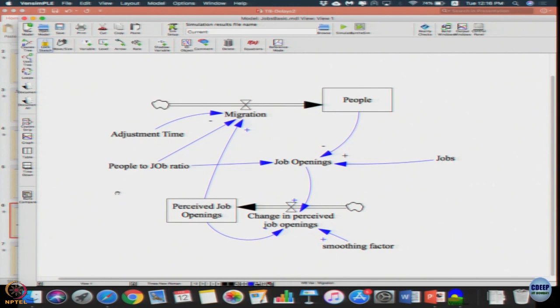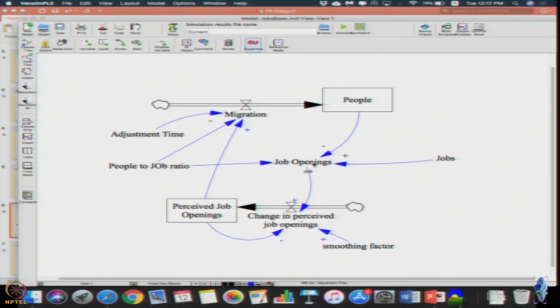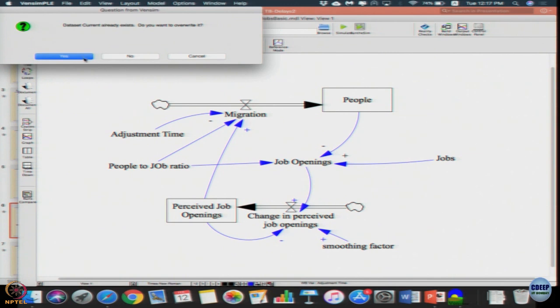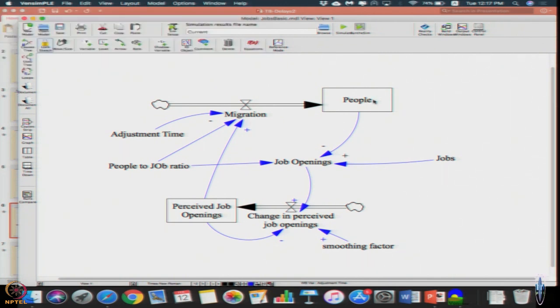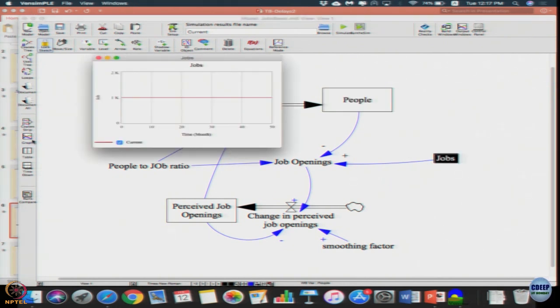Now we have two stocks in the system. This itself is a delay because adjustment time we have taken as 2, that means after 2 months is average time it takes for people to move. Now we are putting an additional thing called as additional information delay, where job opening information is received later and then based on the perceived openings people migrate and people migrate and fill the jobs. Now let us simulate this. Let us look at people. Just to clarify, we can go to jobs. Job is same constant at 1000, there is no change in jobs.